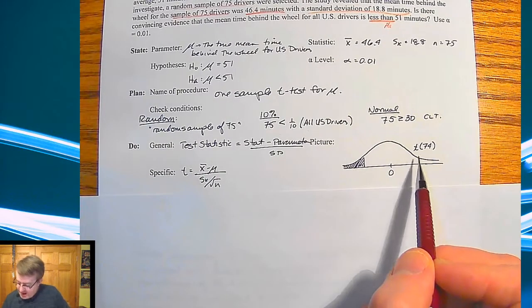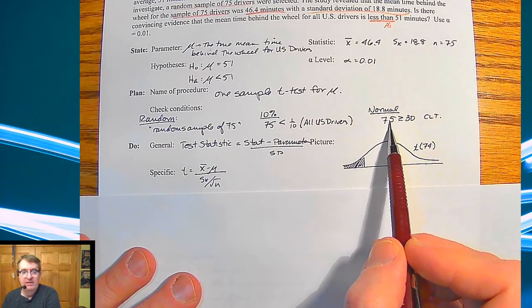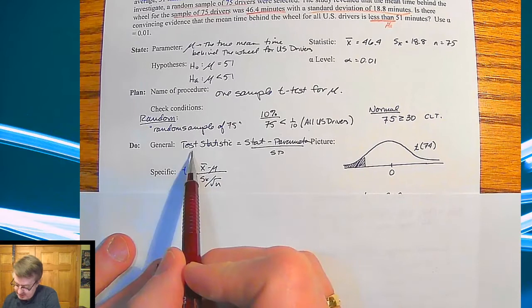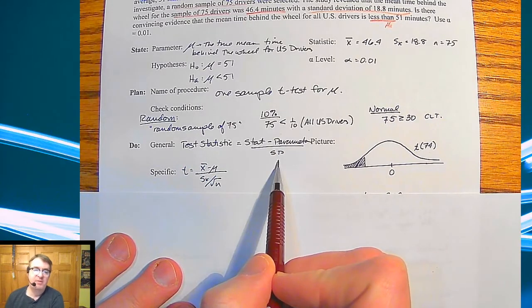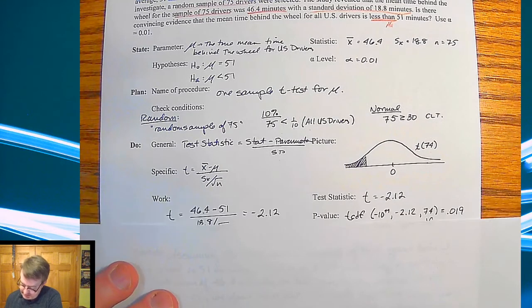So a couple of things here. So here's my graph. I have a t-test. There's my degrees of freedom, 74. Remember, that's always one less than our sample size. The test statistic, stat minus parameter divided by standard deviation. There is the same formula that I had above for the t-statistic.